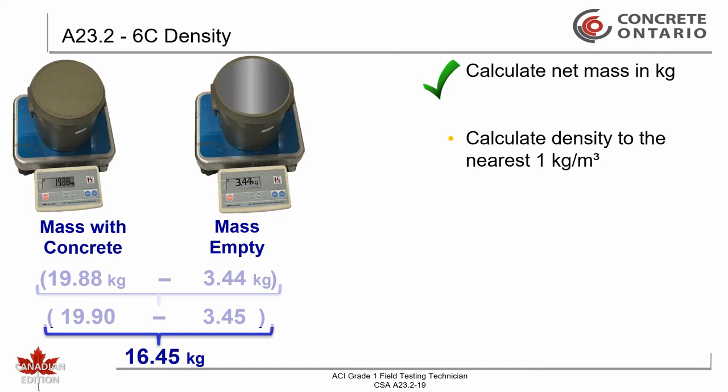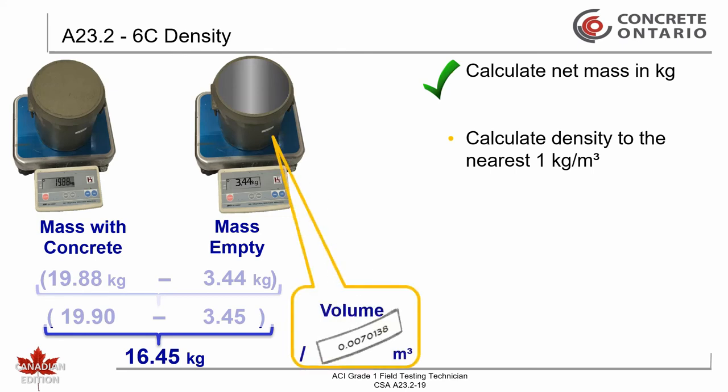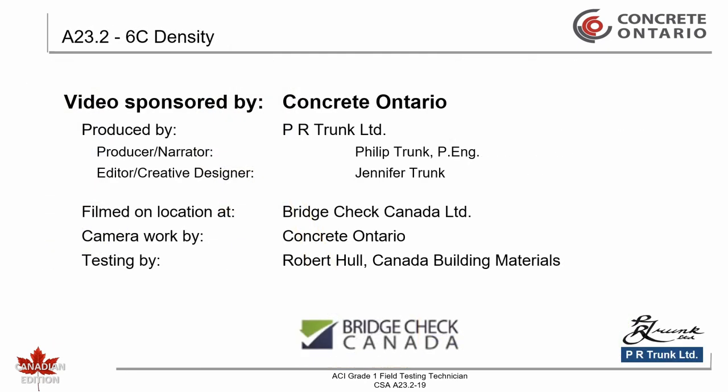Calculate the density by dividing the net mass by the volume of the container, also previously determined. In our example, the net mass is divided by a volume of 0.0070138 cubic meters, or 7.01 liters, giving a density of 2345 kilograms per cubic meter, which is to be recorded to the nearest one kilogram per cubic meter. This concludes the density test.